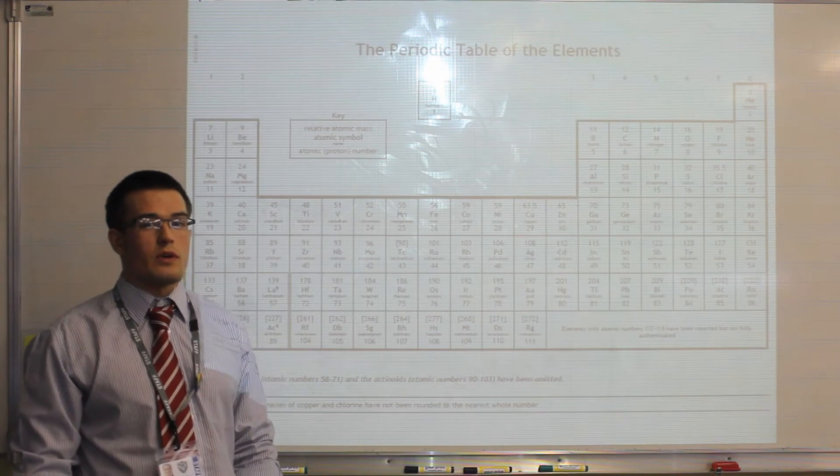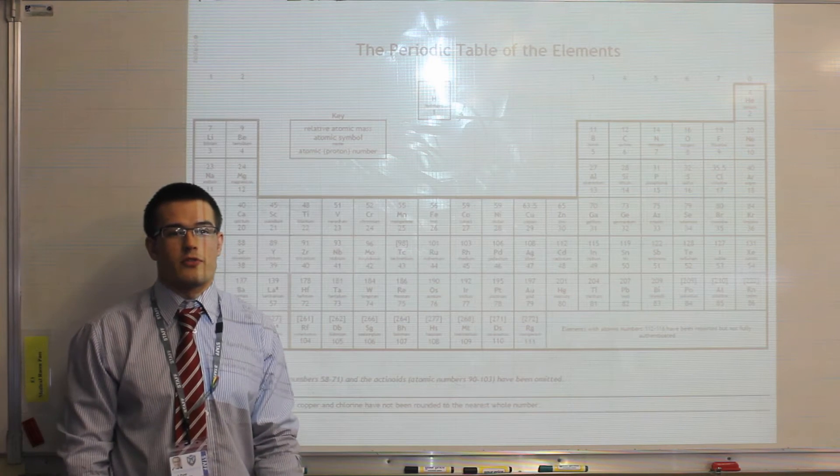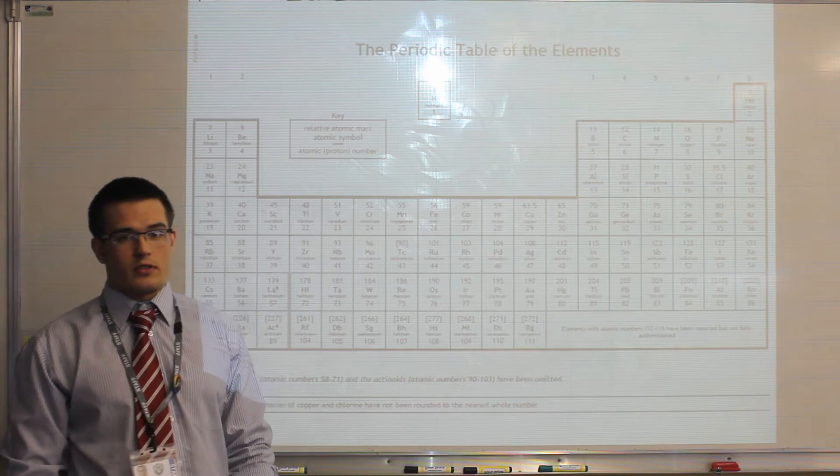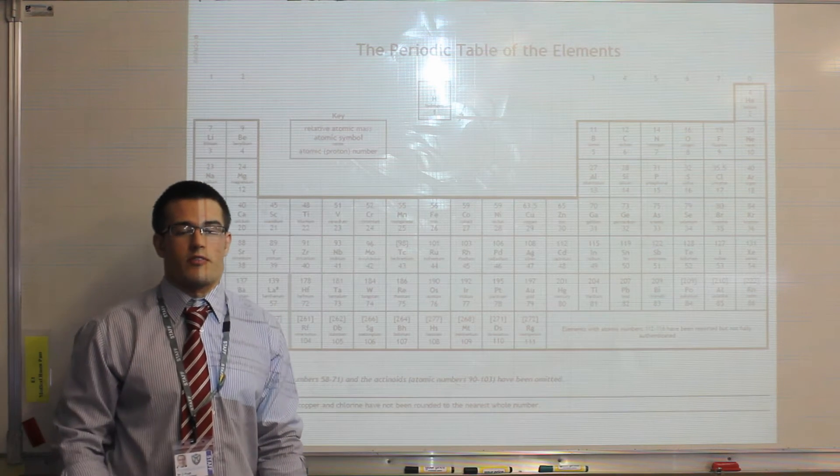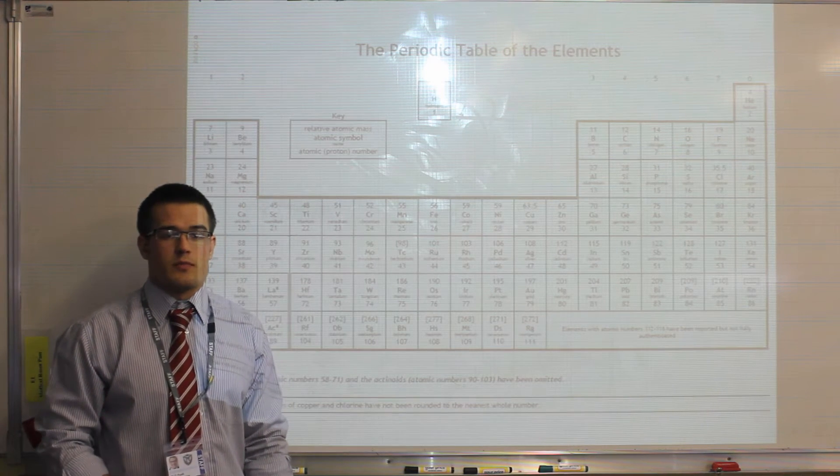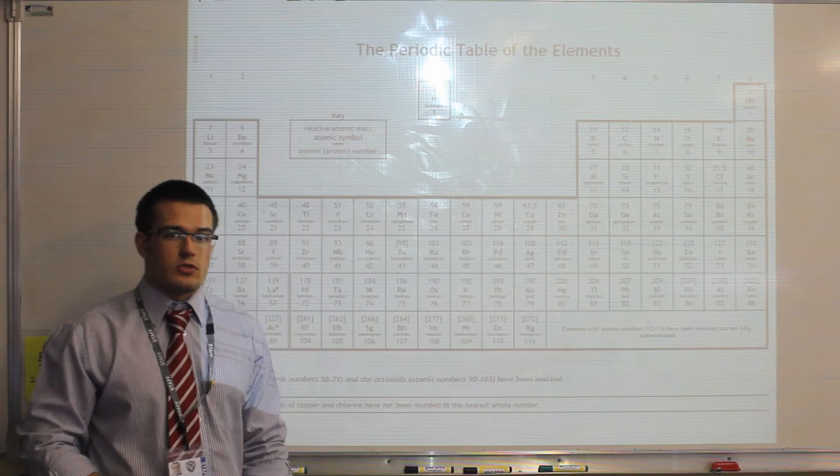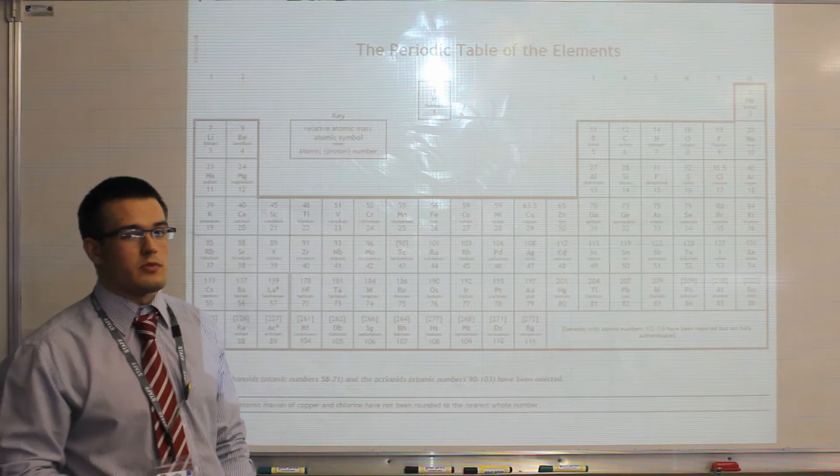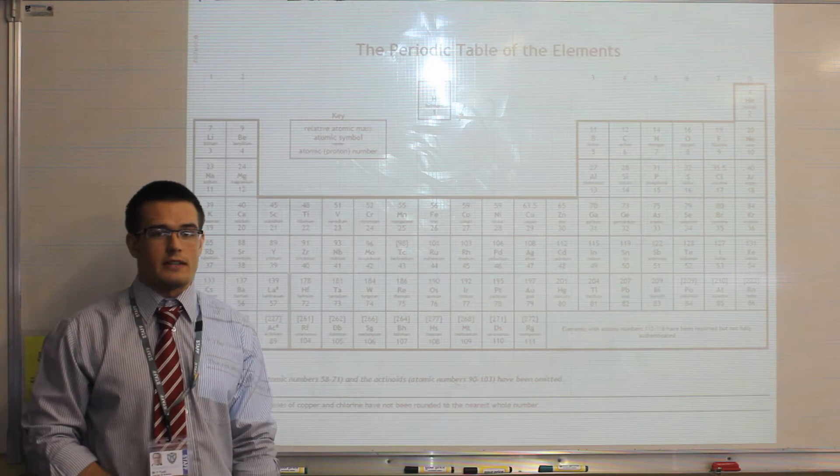This video is going to look at how we write the chemical formula for salts. Salts are examples of an ionic compound and are formed between the reactions of acids and bases, or acids with metal carbonates. So salts are really common and we need to be able to work out their formula based upon their ions.